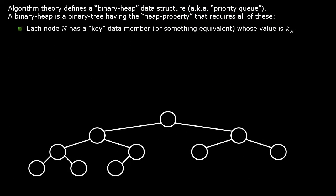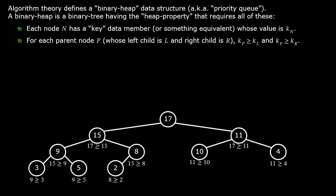Algorithm theory defines a binary heap data structure, which is some kind of binary tree that has a property called the heap property. For the heap property, each tree node has some special data member called its key. For each parent node, that parent node's key is at least as large as either of its children.